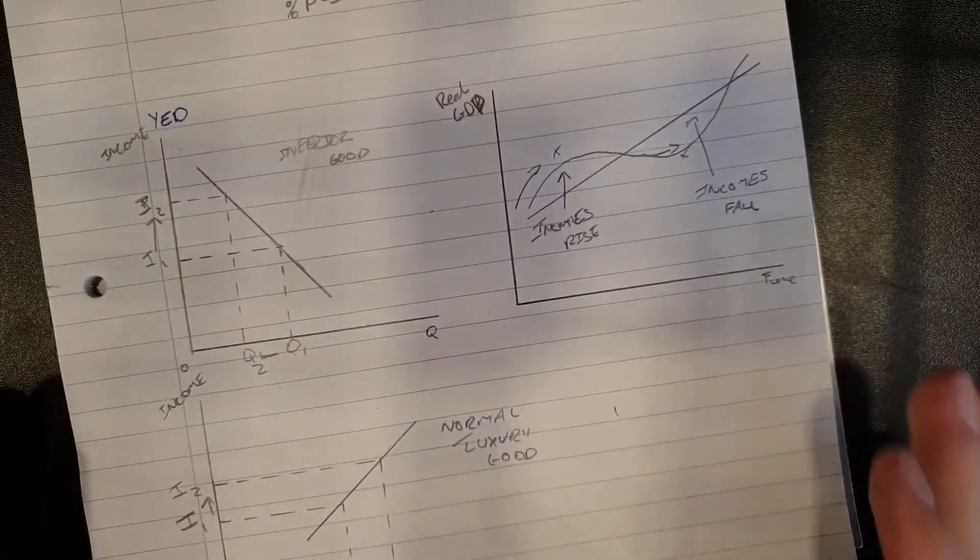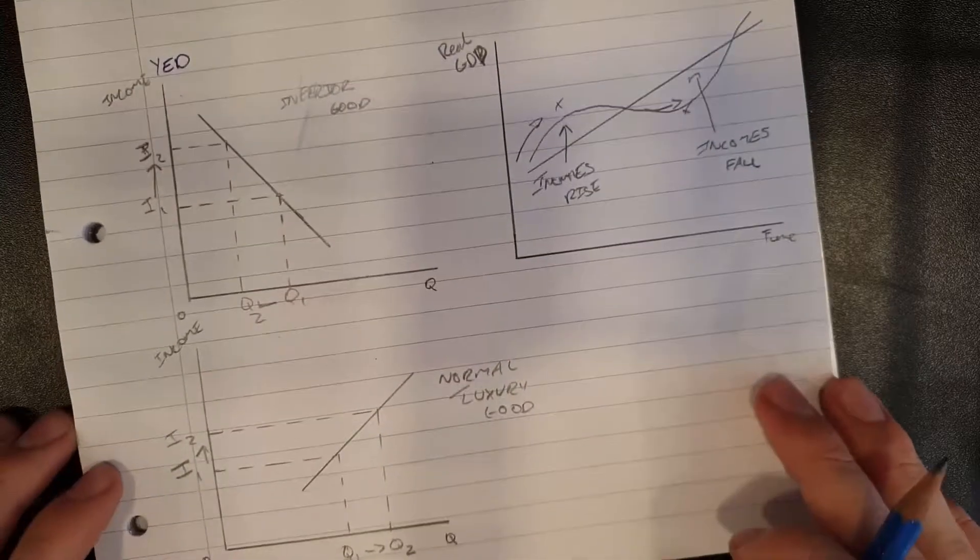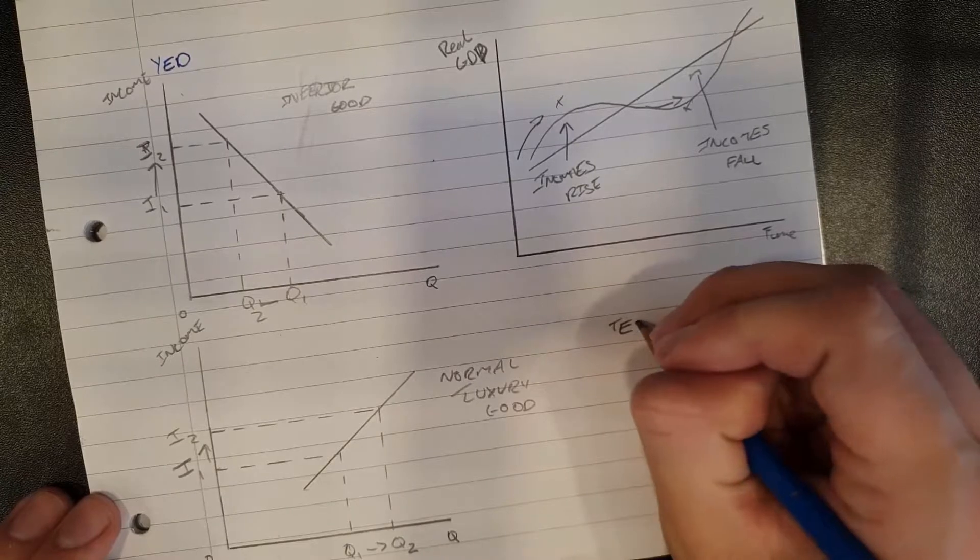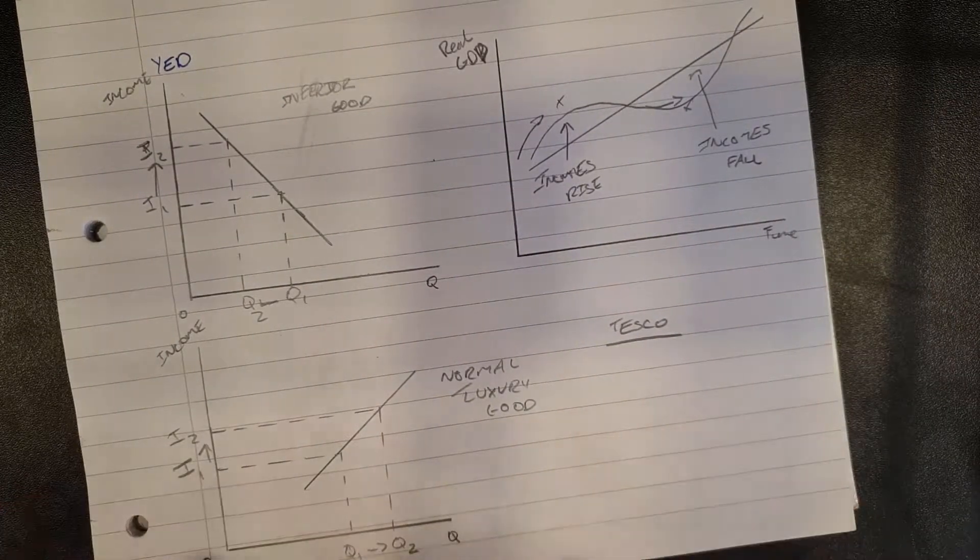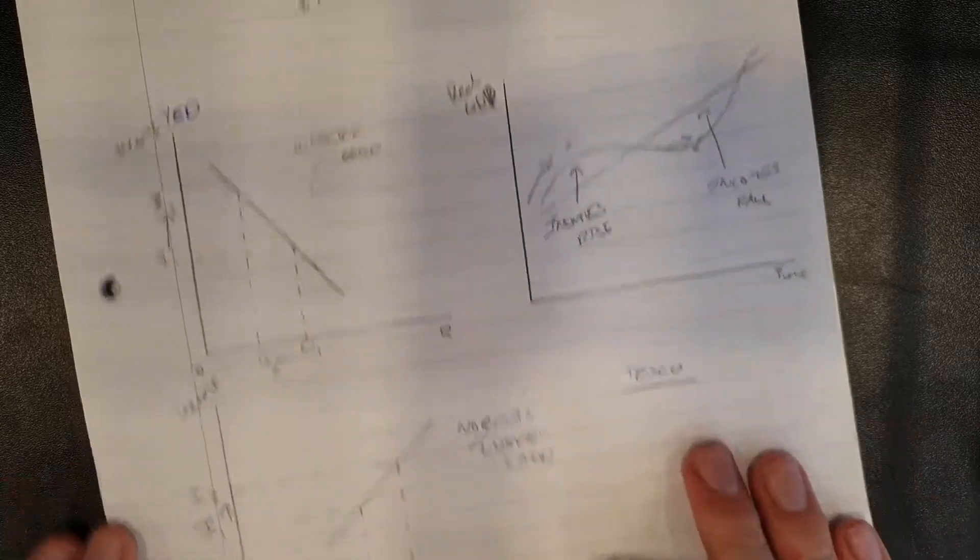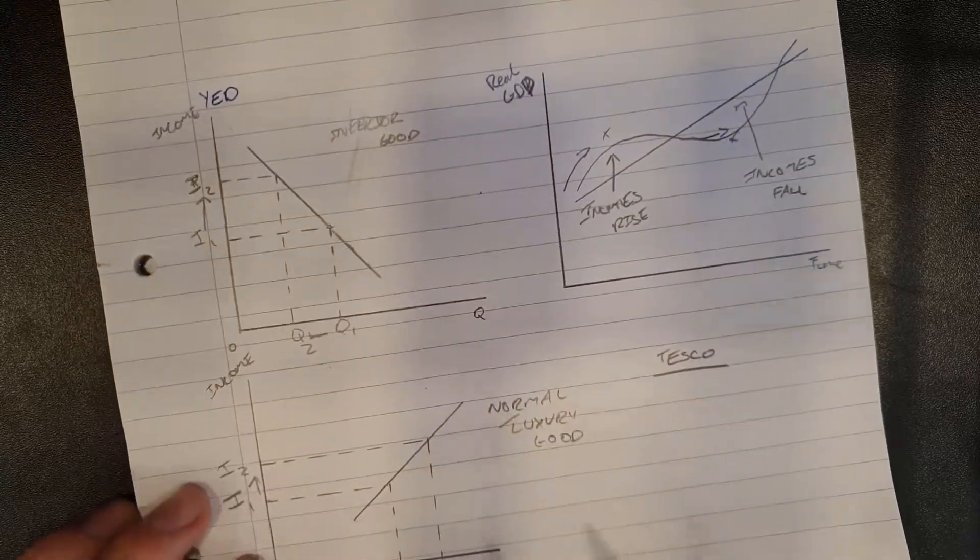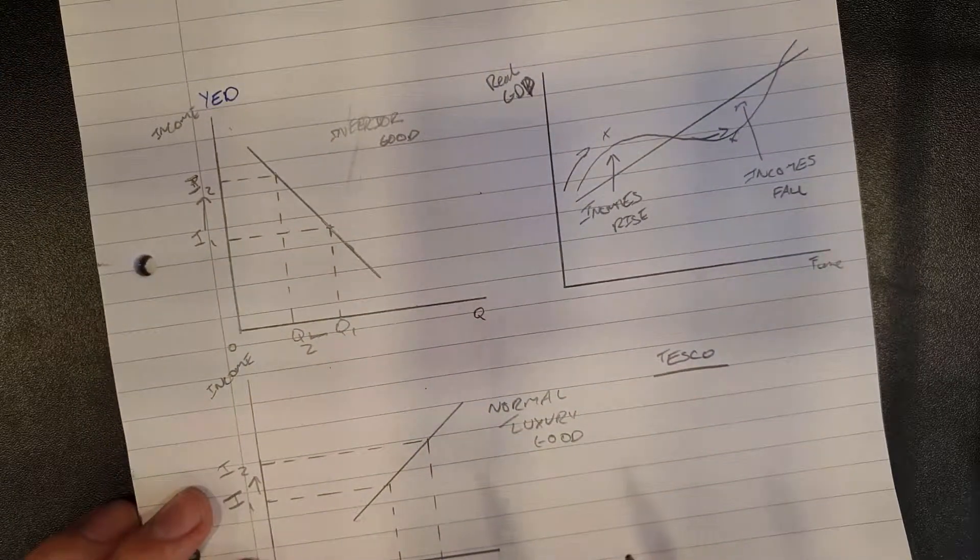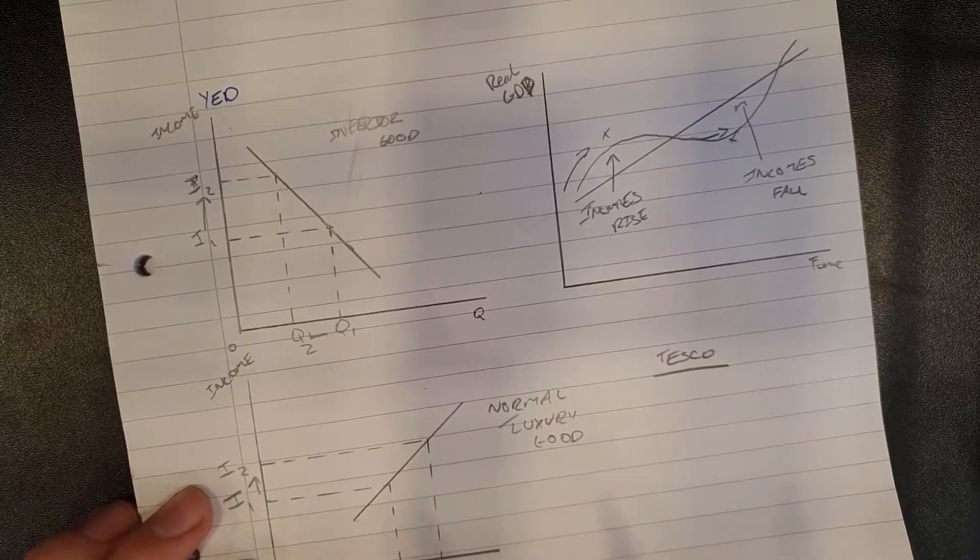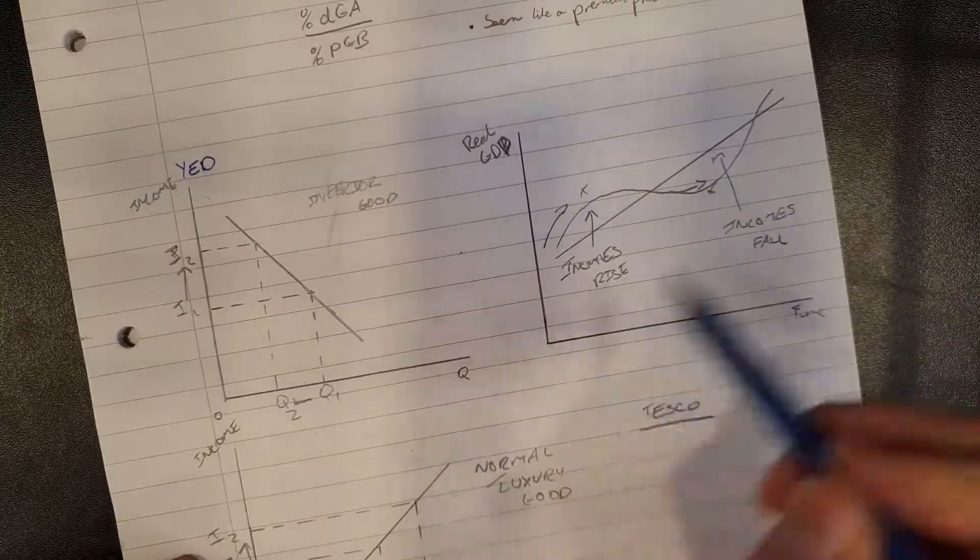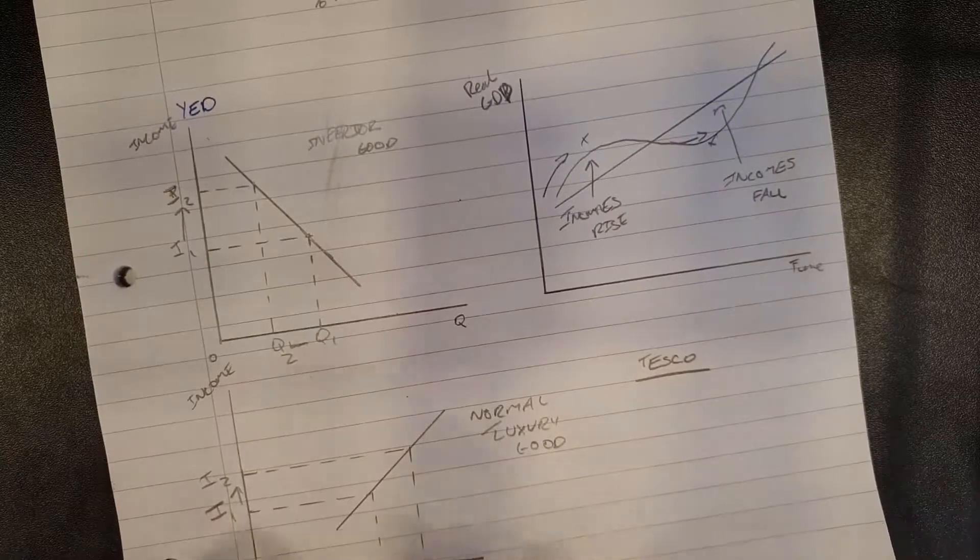But how does this apply to a firm? Let's say I was head of economic analysis at Tesco. Now, Tesco, a big UK supermarket, they sell all types of good. They sell inferior goods, such as their own brand products. And they also sell normal or luxury goods, which are more expensive, branded, and generally considered a better quality product.